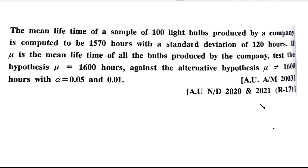Hi students. In this video, we will solve one problem on the large sample single mean topic. The question is: the mean lifetime of a sample of 100 light bulbs produced by a company is computed to be 1570 hours, with a standard deviation of 120 hours. If mu is the mean lifetime of all the bulbs produced by the company, test the hypothesis mu equal to 1600 hours against the alternative hypothesis mu not equal to 1600 hours, with alpha equal to 0.05 and 0.01.